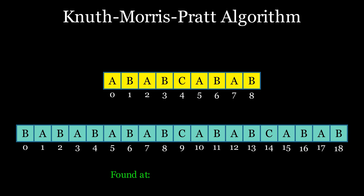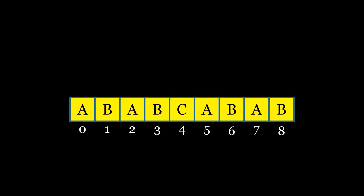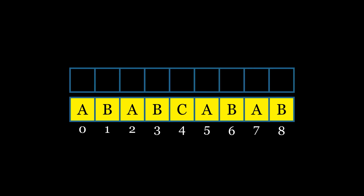Coming back to the KMP algorithm — before we proceed with the search, we first need to construct the longest prefix suffix array, or the LPS array. This array is the same size as the pattern, and the idea is that if a suffix of the pattern matches a prefix, we can avoid rechecking those characters when a mismatch occurs.